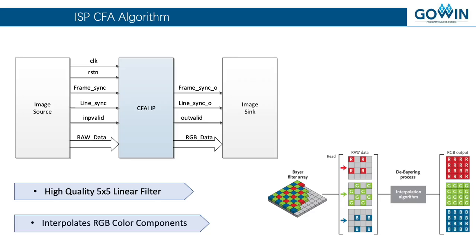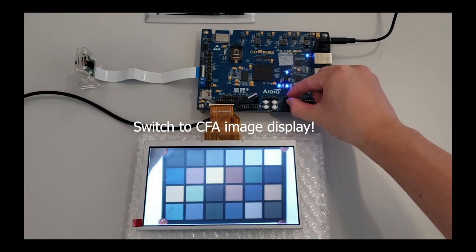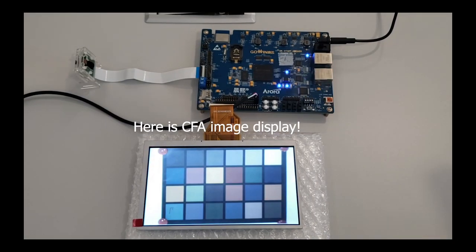The CFA utilizes the current pixel that is available and interpolates the other pixels. For example, if you have a green pixel, it interpolates the red and the blue based on the adjacent pixels surrounding that green pixel.